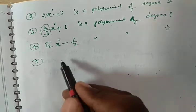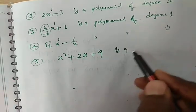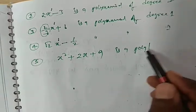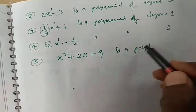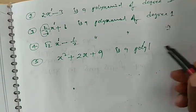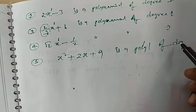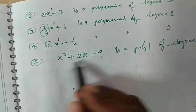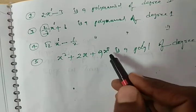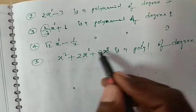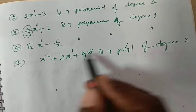Next example: x² + 2x + 9 is a polynomial. The powers of x here are 2, 1, and 0 (since x^0 = 1). The maximum power is 2, so this is a polynomial of degree 2.